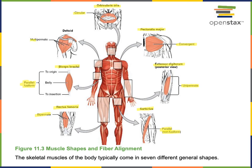An example that is multipennate is the deltoid muscle, found superficially in the acromial region. A multipennate muscle is one in which the tendon branches and fascicles are attaching obliquely from a variety of directions onto the branching tendon. The deltoid's multipennate arrangement enables the muscle to be very forceful and to have a wide variety of actions: the anterior region produces flexion of the glenohumeral joint, the posterior region produces extension, and the middle region produces abduction of the glenohumeral joint.